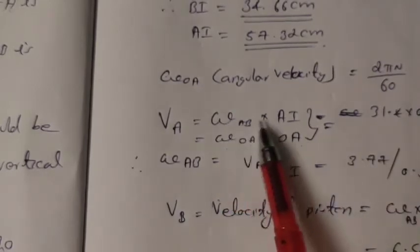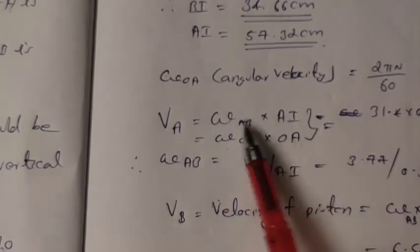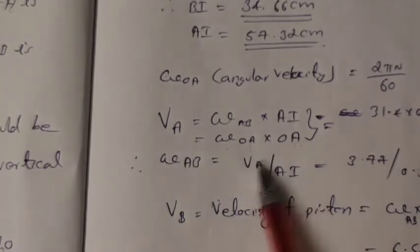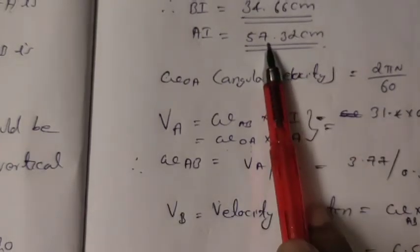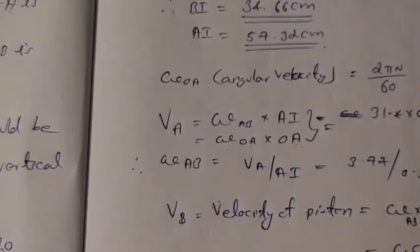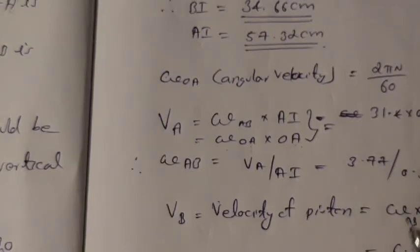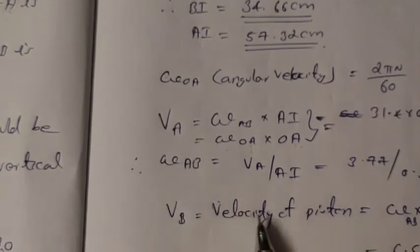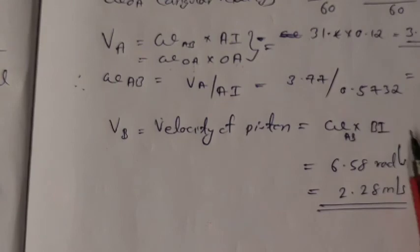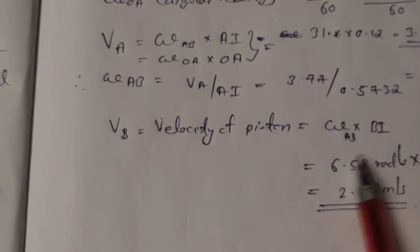From VA equals ω_AB multiplied by AI, we get ω_AB equals VA divided by AI. Substituting VA and converting AI from 57.32 centimeters to meters, we get ω_AB equal to 6.58 radians per second. Finally, the velocity of the piston B is VB equals ω_AB multiplied by BI, which gives 6.58 multiplied by 0.5466, yielding VB equal to 2.28 meters per second.